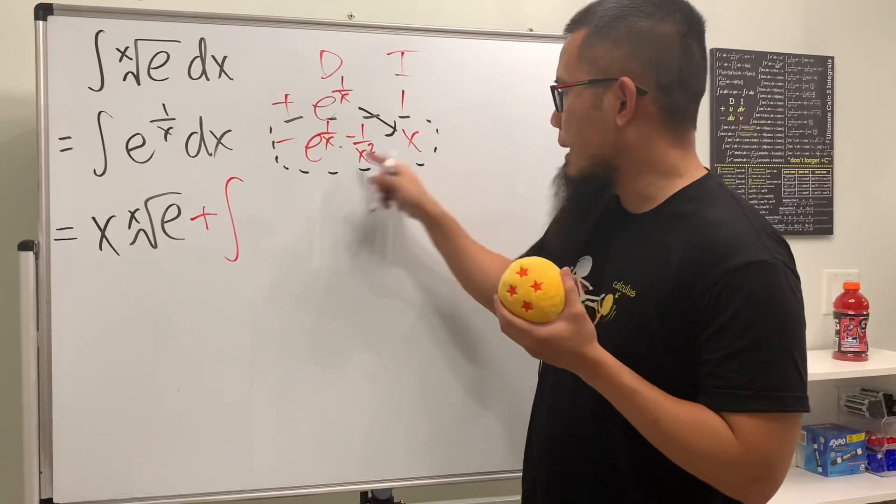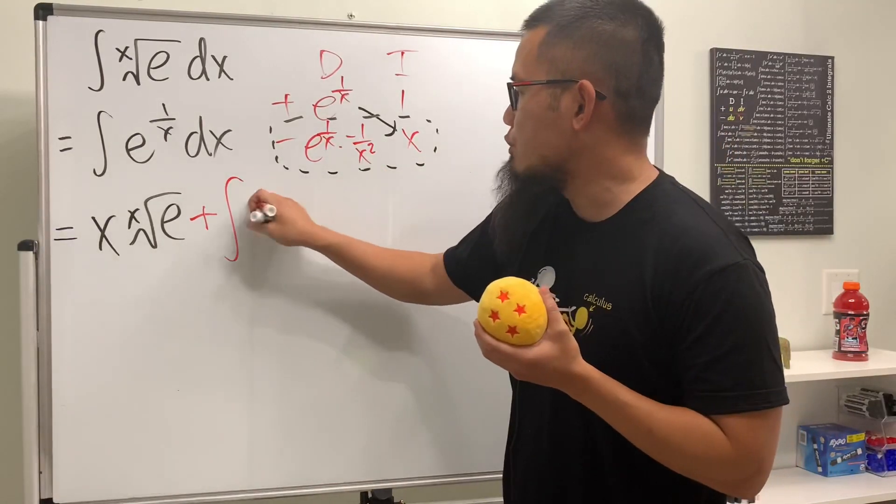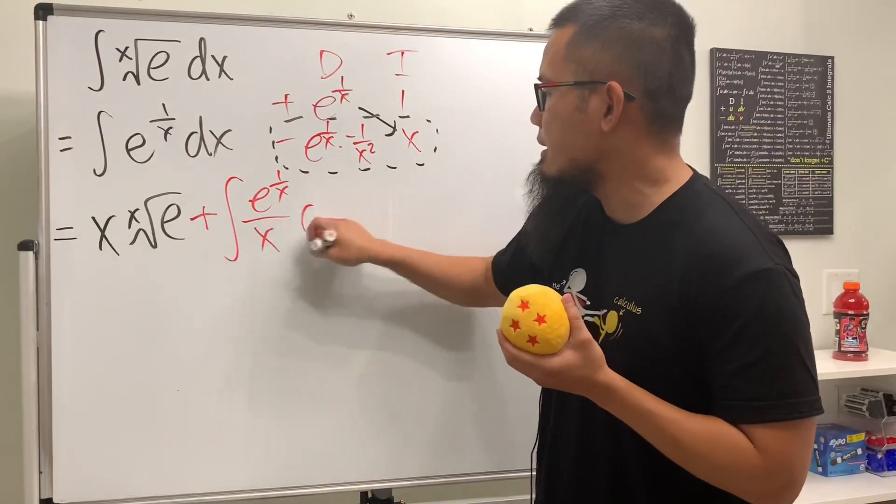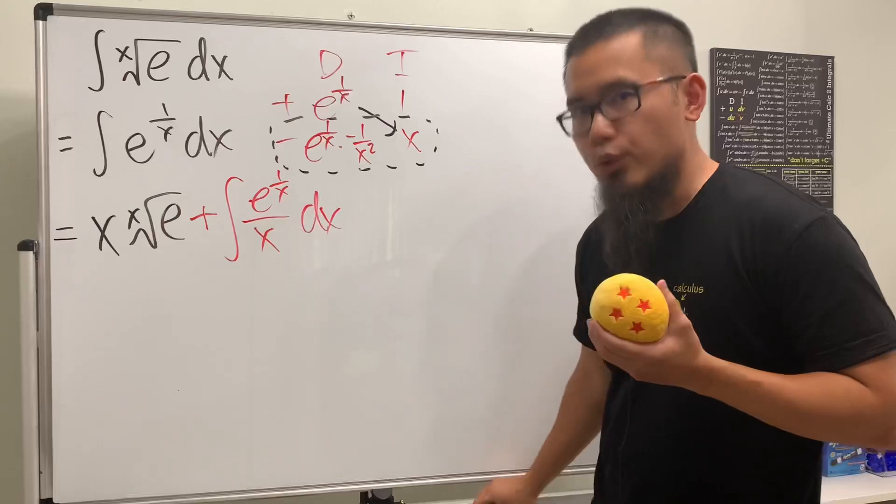And we have to integrate, well, if we have this multiply this, that and that. So this is going to be on the top, which is e to the one over x. And you see that we can cancel one x right here, so we just get x on the bottom like this. And now what do we do? Yes, we can use u-sub.